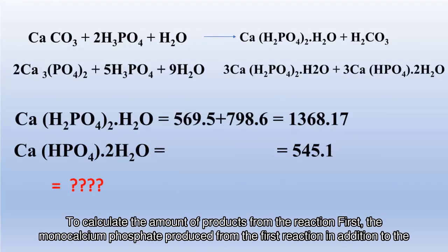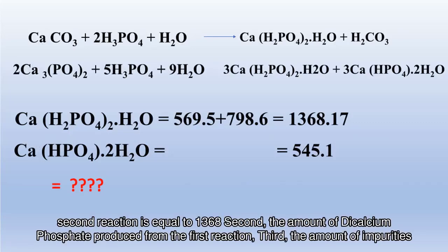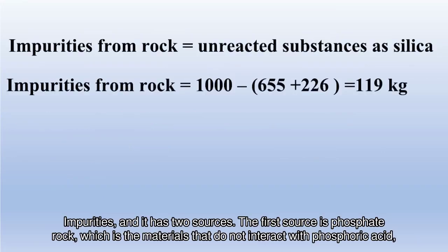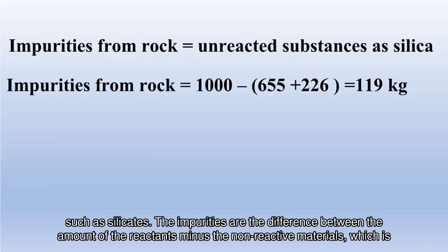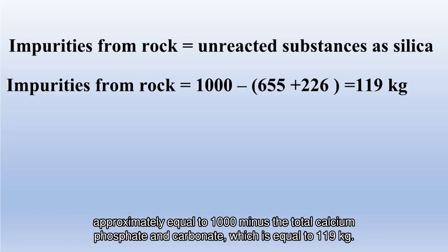To calculate the total products: first, the monocalcium phosphate from the first and second reactions combined equals 1368 kilograms; second, the amount of dicalcium phosphate from the first reaction; and third, the impurities. Impurities from phosphate rock are materials that do not interact with phosphoric acid, such as silicates. These equal the difference between the amount of reactants minus the non-reactive materials, approximately 1000 minus the total calcium phosphate and carbonate, which equals 119 kilograms.